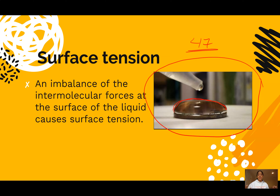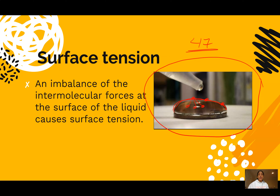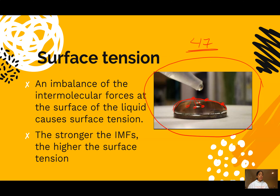Water has a really high surface tension, and that makes sense because water has very strong hydrogen bonds — strong intermolecular forces, therefore high surface tension. This is due to an imbalance of intermolecular forces: the outer water molecules have imbalanced forces because the inner molecules are pulling them inward. A completely nonpolar substance with only London dispersion forces wouldn't pile up as high on the penny. The stronger the intermolecular forces, the higher the surface tension.